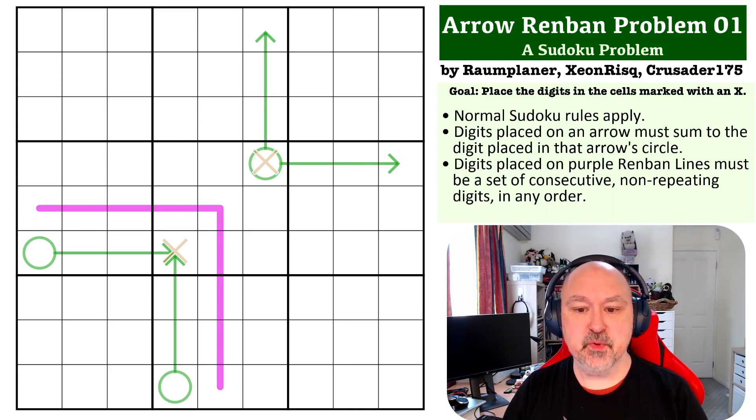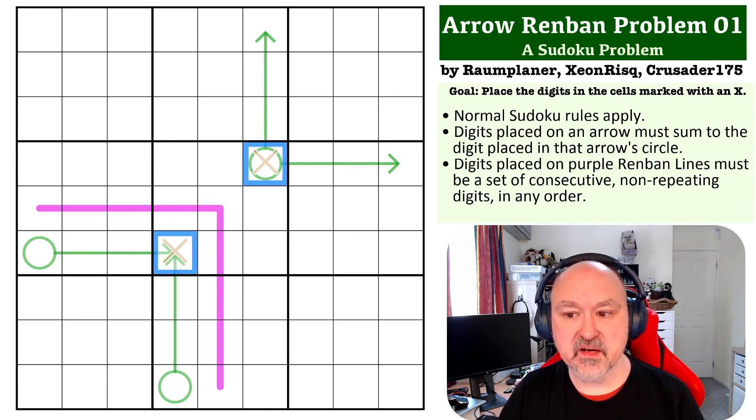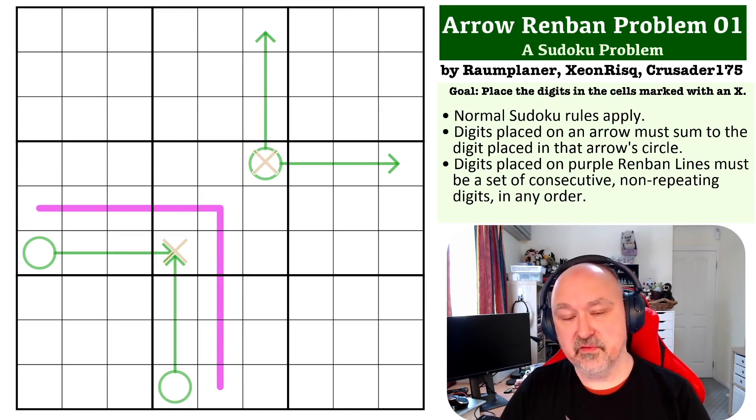So that's what we have for this problem. The goal is to get the cells marked with an X. You grab a link to this one below. You're probably going to need a grid. If you can do this one in your head, congratulations. I couldn't. And then, feel free to pause the video, and I will come back in a few seconds and try and explain how this one works.